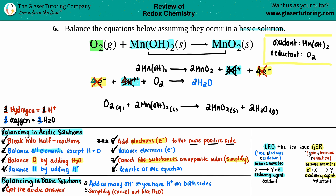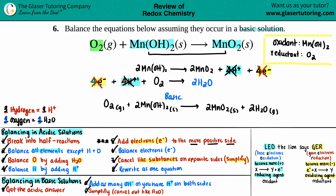Technically, completing the acidic answer was just step one of the basic solution process. Now step two for basic: add as many OH⁻ as you have H⁺. But looking at the final balanced equation, there are no H⁺'s — they were canceled out in step seven. Since I don't have any H⁺'s, I can't add any OH⁻'s, and since nothing changed, I can't simplify further. So this answer is both the acidic and the basic solution answer — how fun is that!